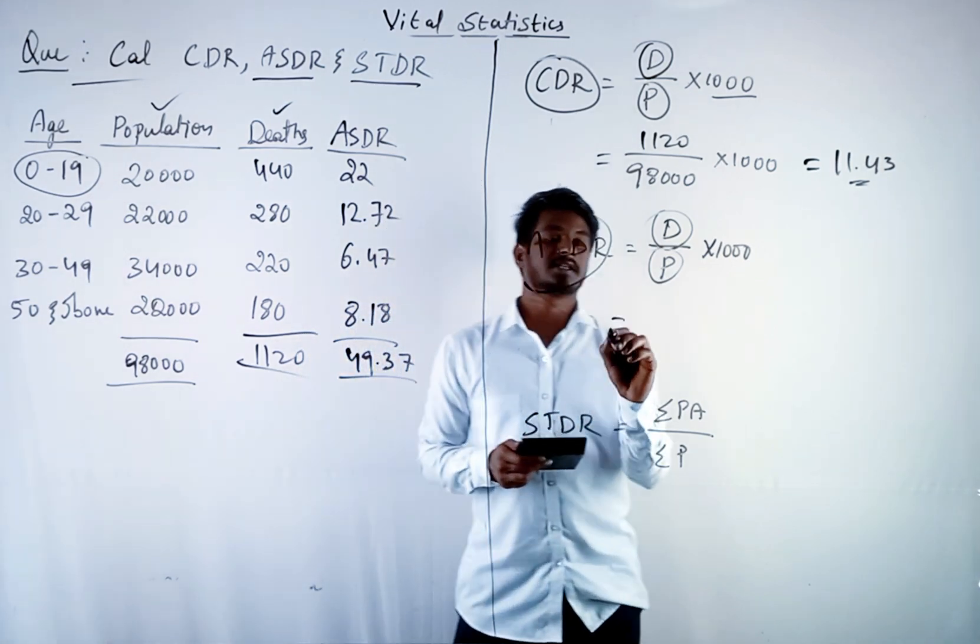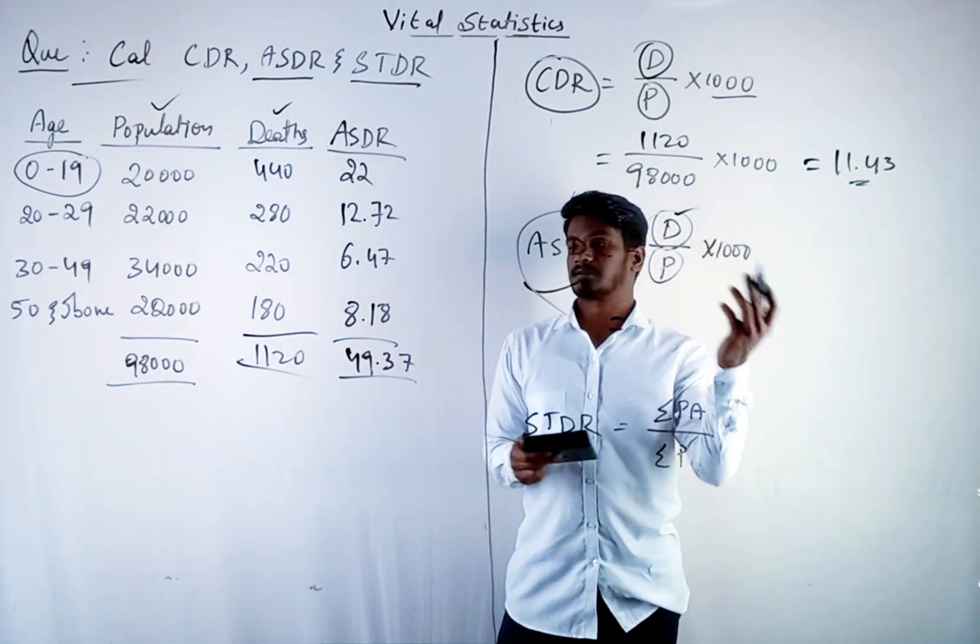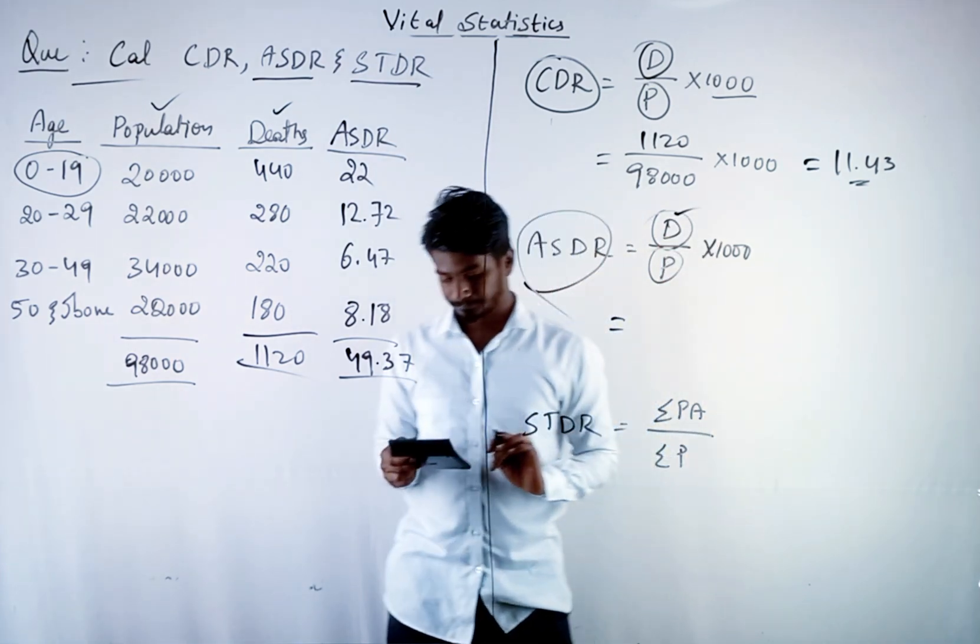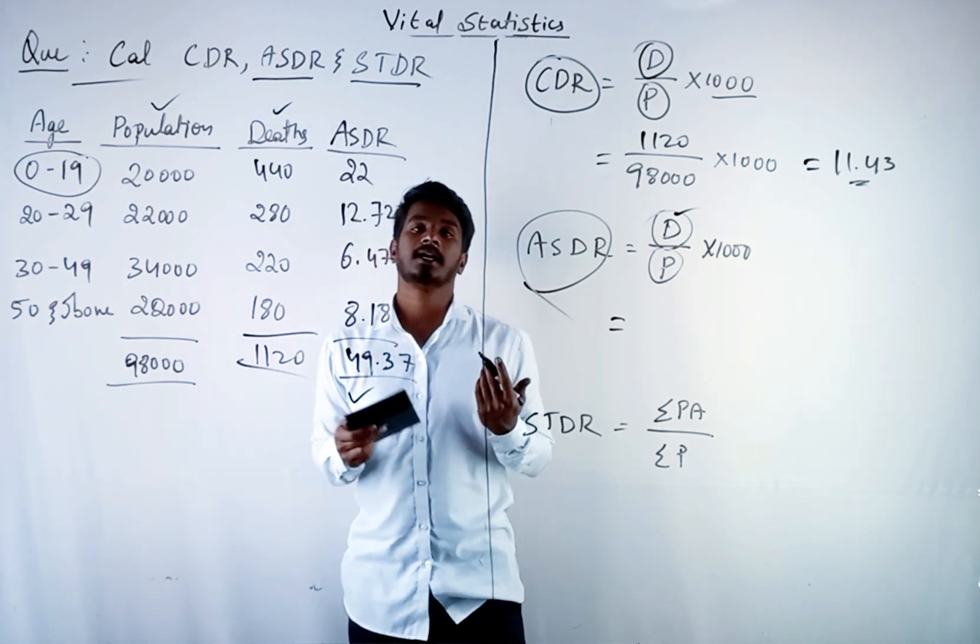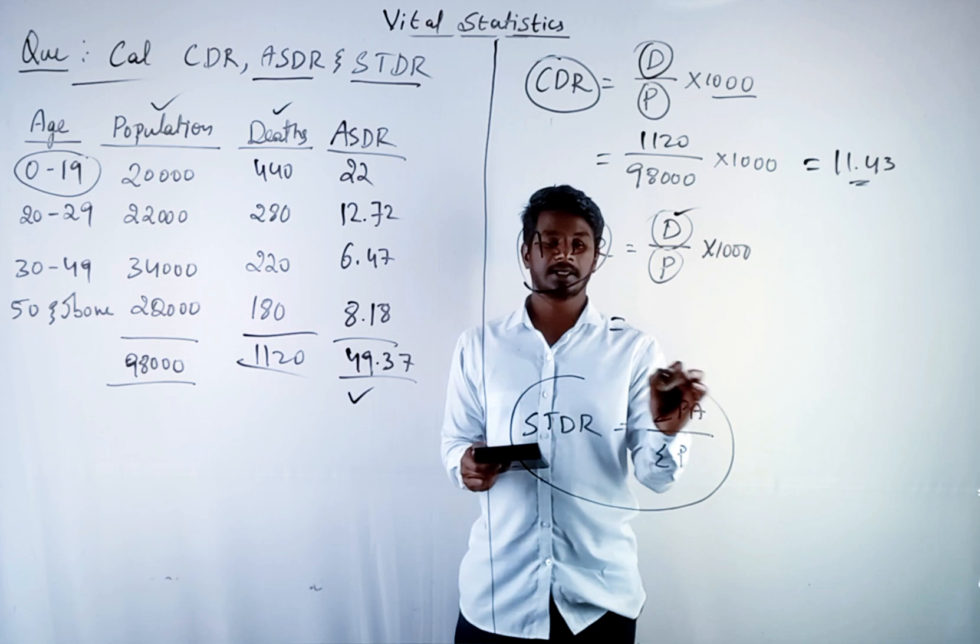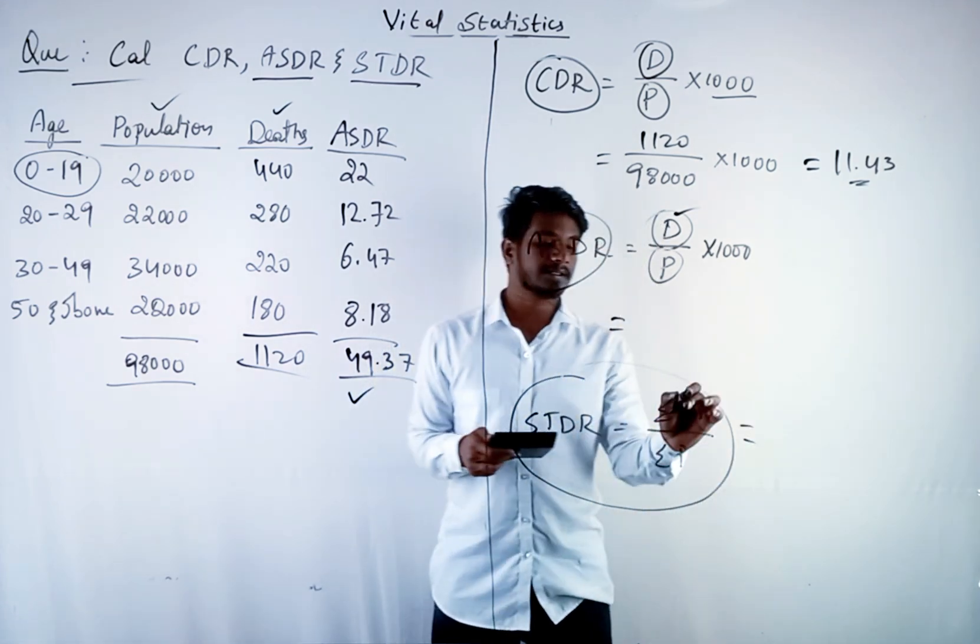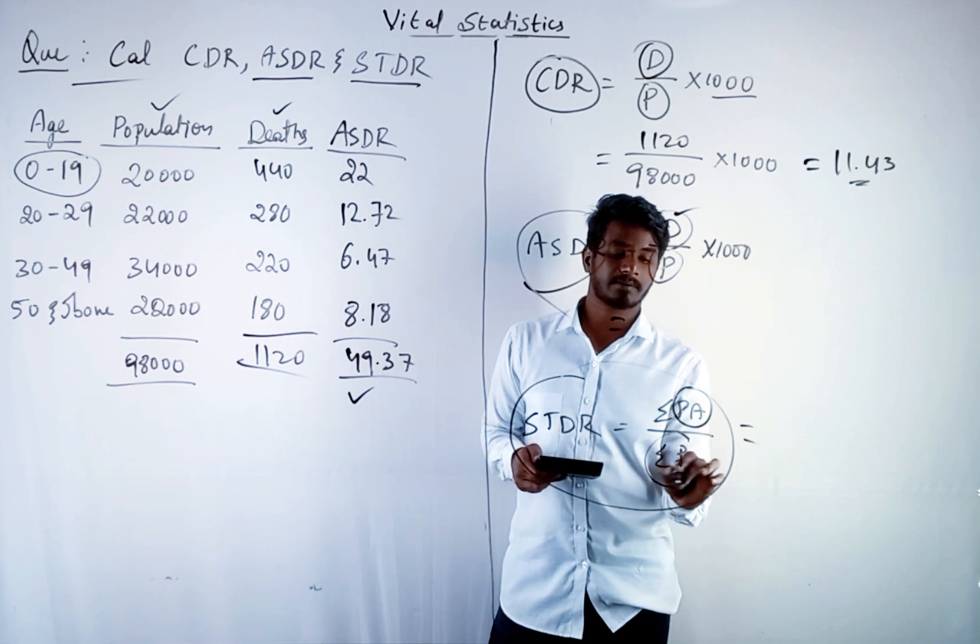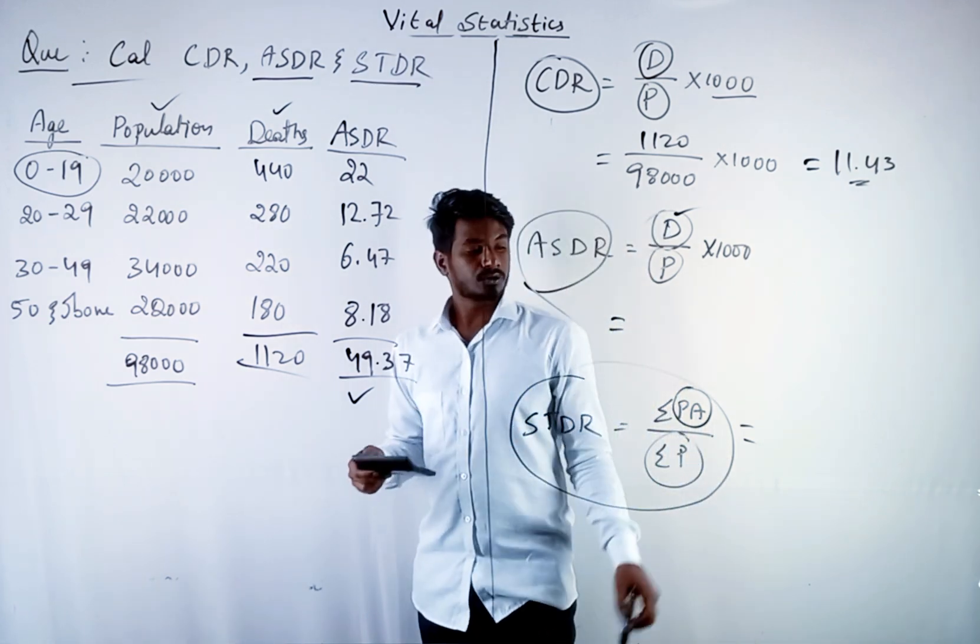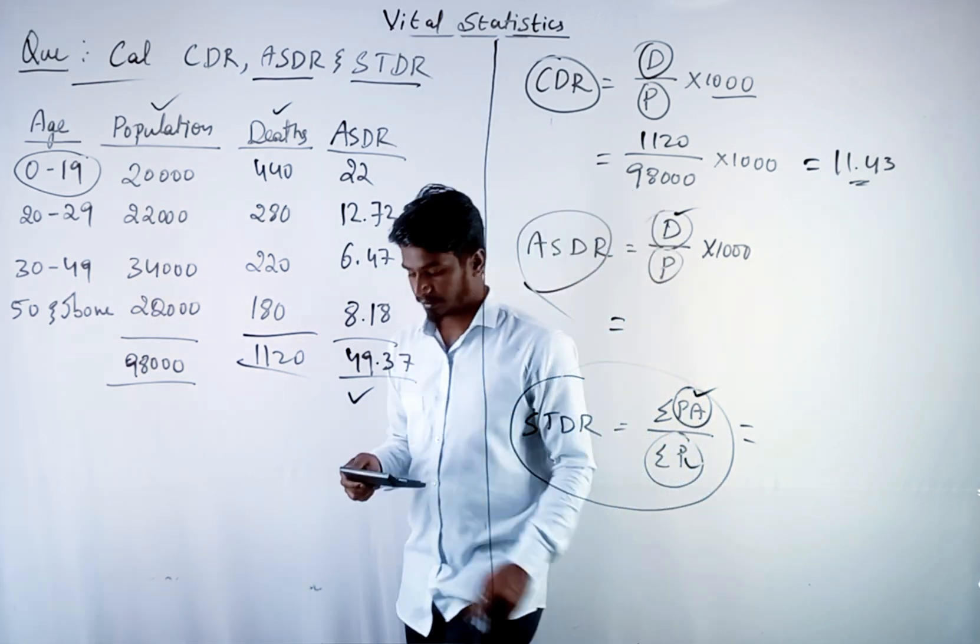49.37 is ASDR. Let us put it in the formula. Yes, that's it. We got ASDR. Next we should calculate STDR. The formula for STDR is summation PA divided by summation P. Where is PA and P? We should calculate that.